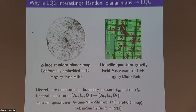I want to mention two reasons why LQG is interesting. The first is that random planar maps are expected to converge in the scaling limit to Liouville quantum gravity. On the left we have a simulation of a random planar map, which we assume falls into the gamma LQG universality class. We embed it in the unit disk in a conformal way — one approach is the harmonic embedding, where we put boundary vertices on the unit circle, attach a spring to every edge, and let it relax into a stable configuration.